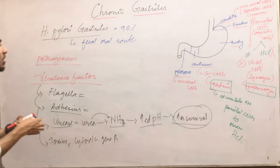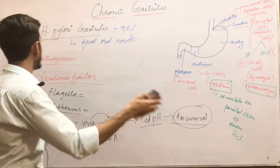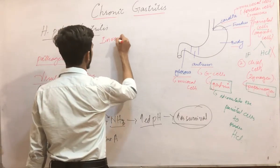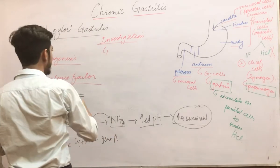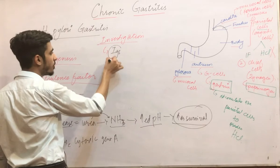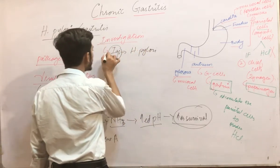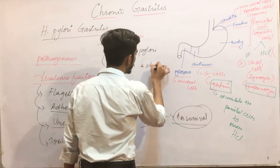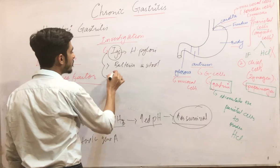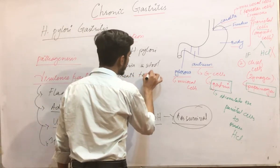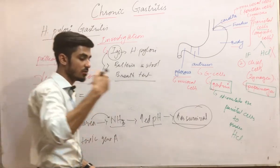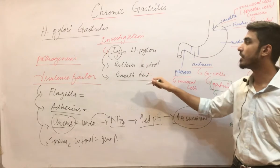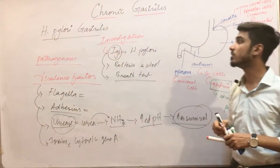Now moving on to the investigations to diagnose this disease. First, you will find IgG antibodies against H. pylori. Second, you can find H. pylori in the stool or feces of the patient. Third, you can use the urea breath test — the patient expires out urea because of the production by the urease enzyme.